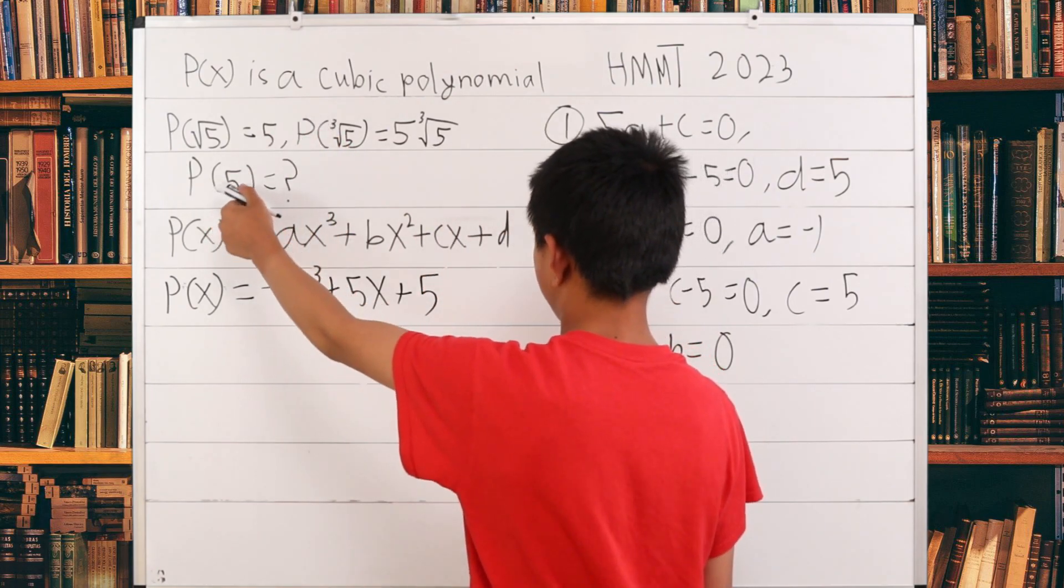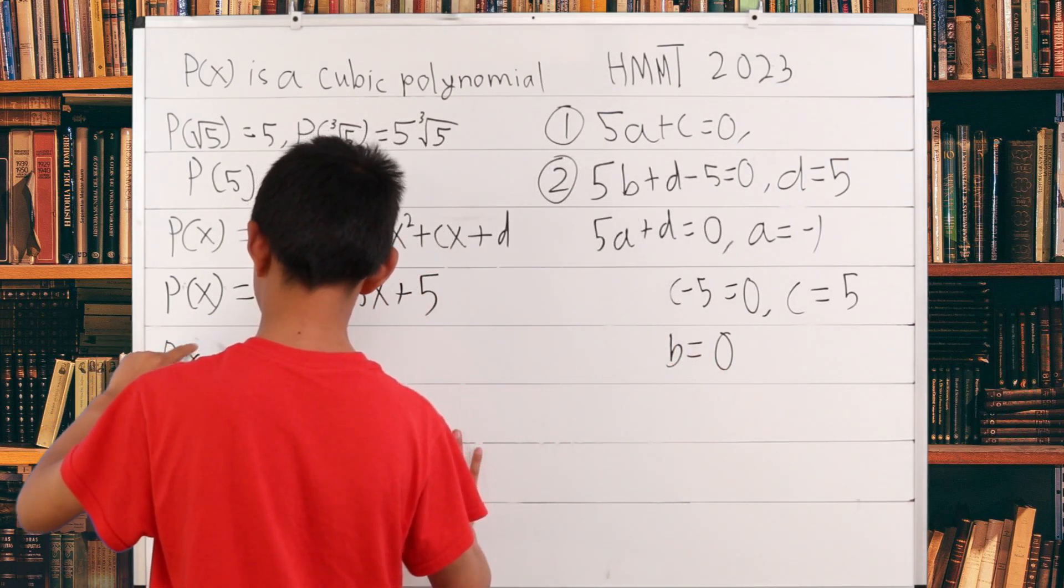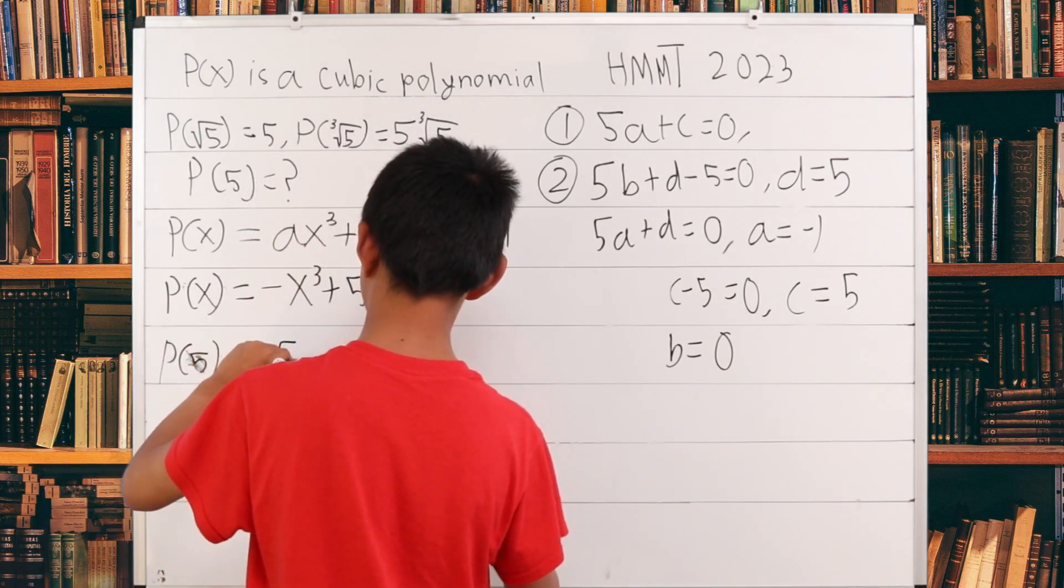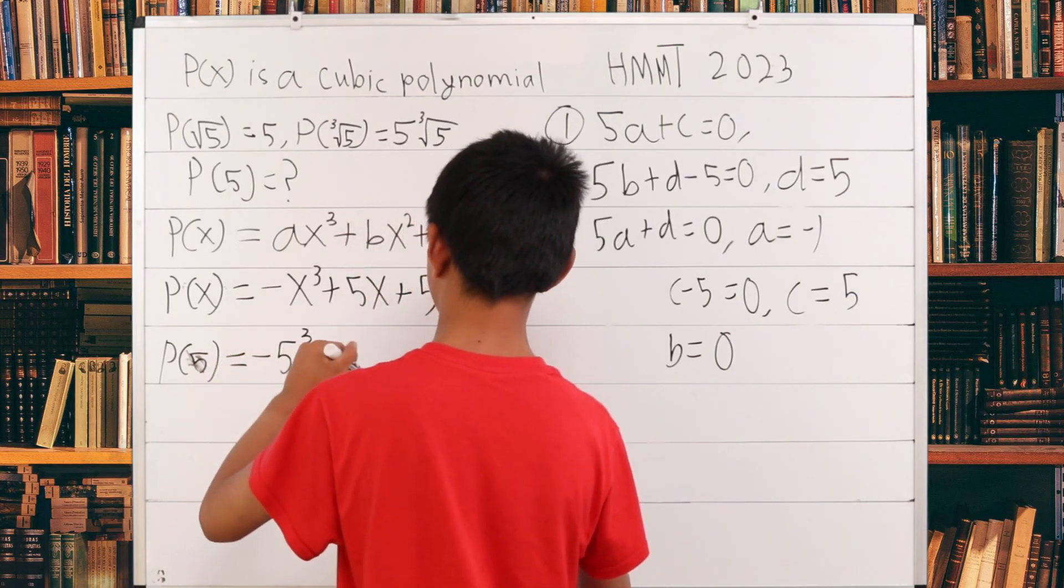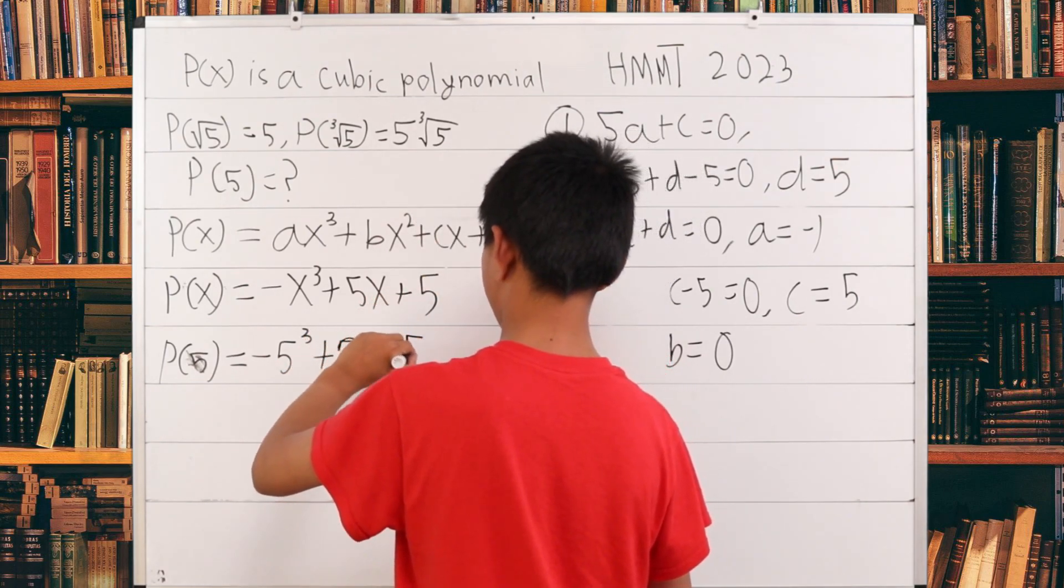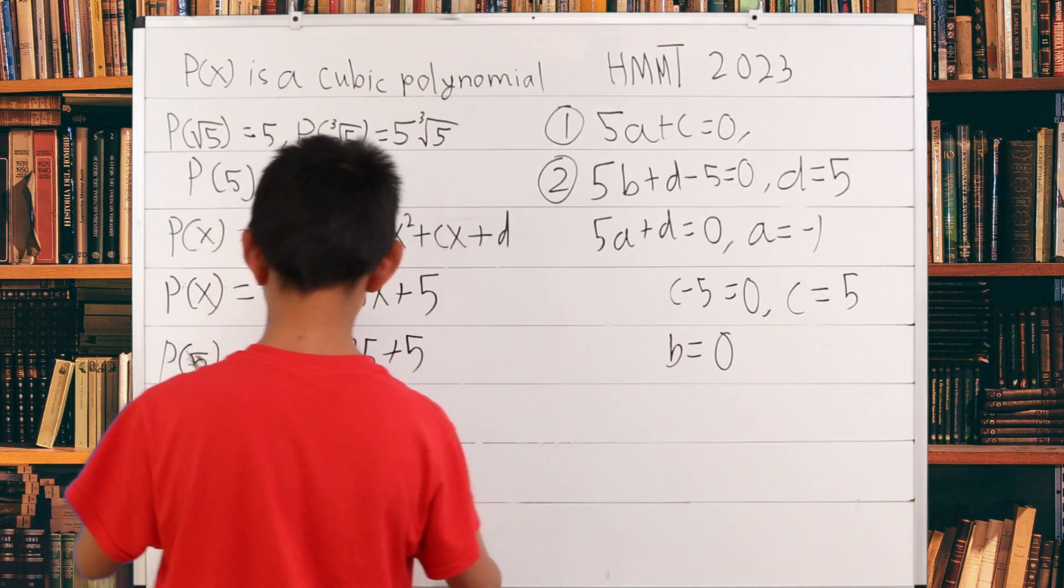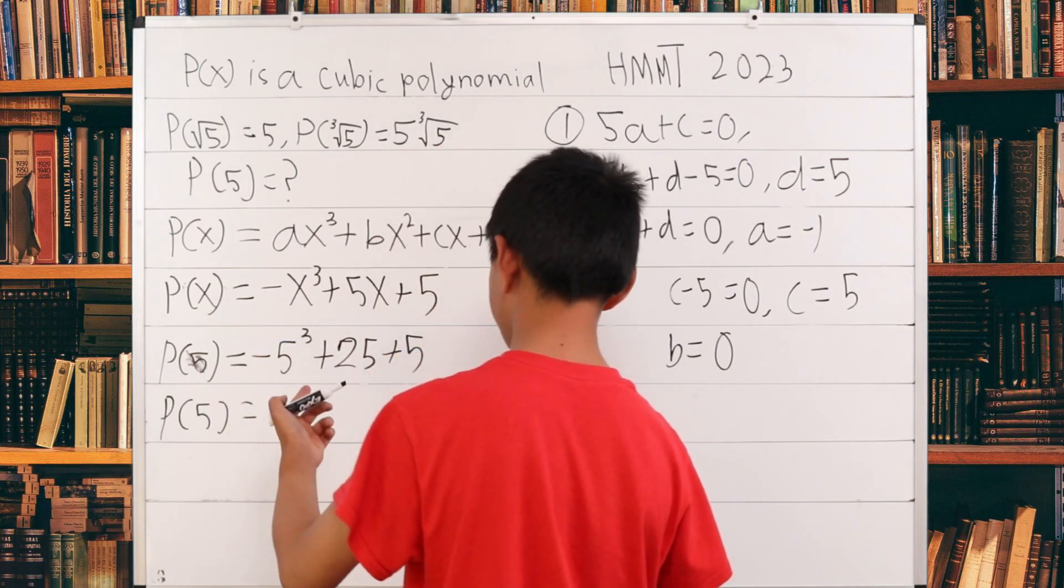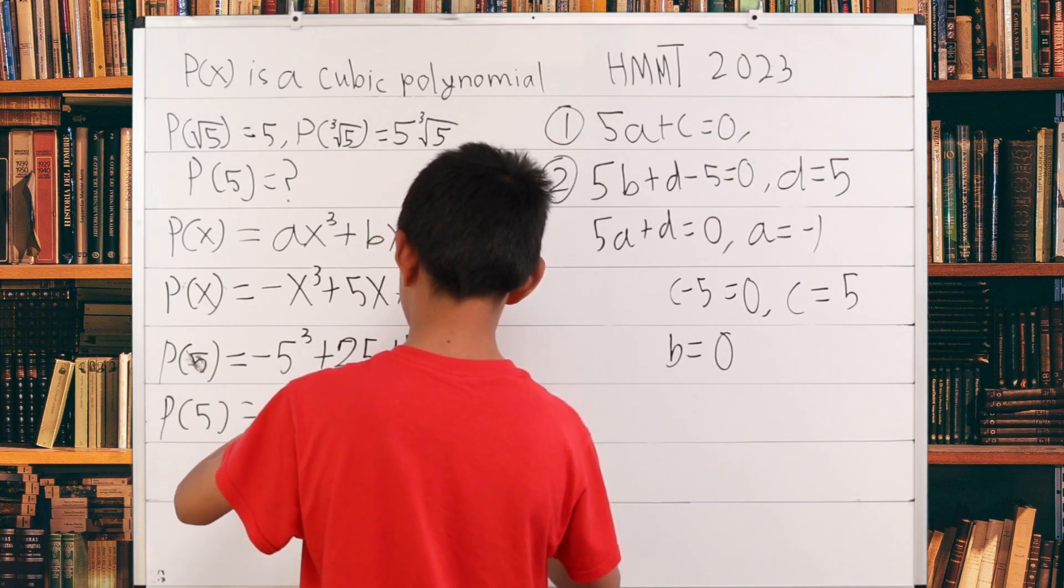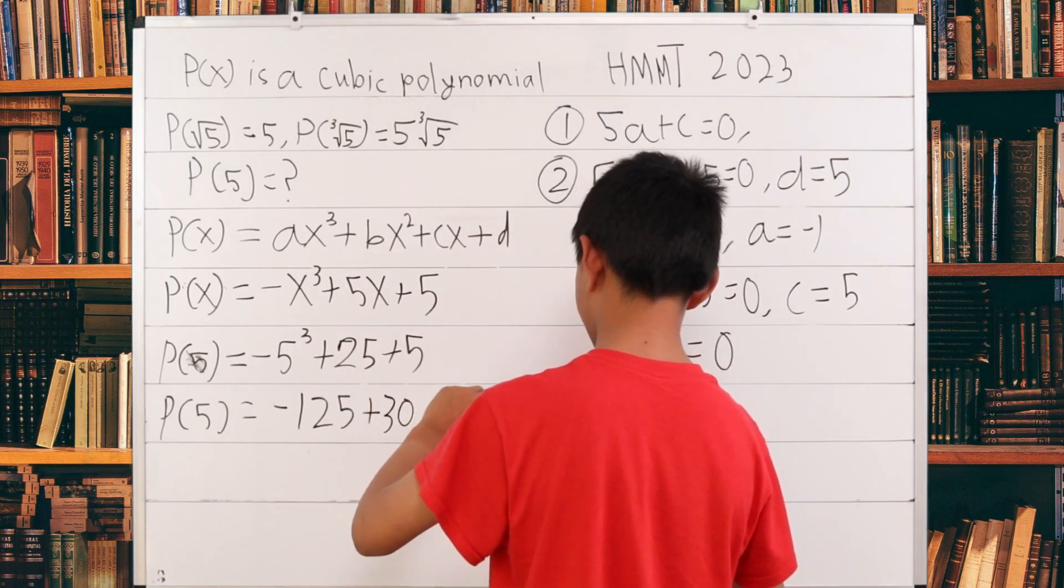Now, we can actually plug P(5) into this equation. When x is 5, P(5) = -5³ + 5·5 + 5, which is just -125 + 25 + 5. So we just solve this. P(5) = -125 + 25 + 5 = -95. This is equal to -95.